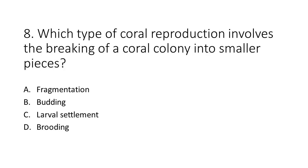Number 8. Which type of coral reproduction involves the breaking of a coral colony into smaller pieces? A. Fragmentation. B. Budding. C. Larval settlement. D. Brooding.